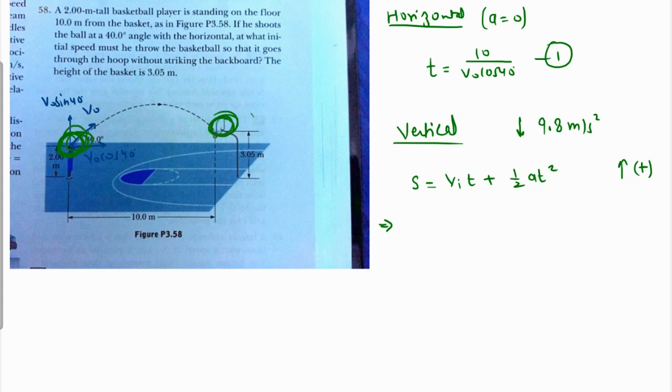Let's take the upside direction as positive. The displacement will be from this point to the hoop, which is 3.05 minus 2. So the displacement is going to be 3.05 minus 2. V initial is v naught sine theta, so that is v naught sine 40. Time is 10 over v naught cosine of 40 degrees, plus...